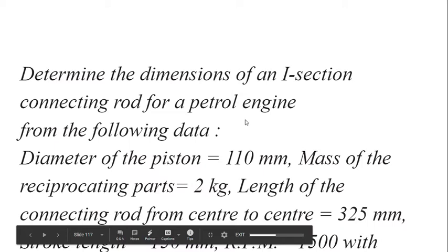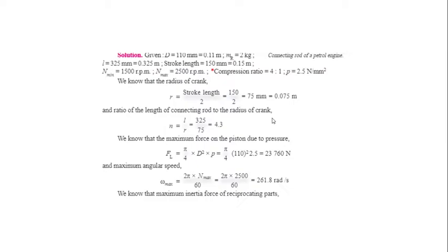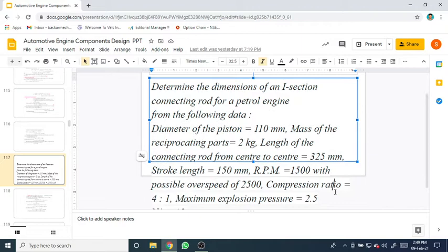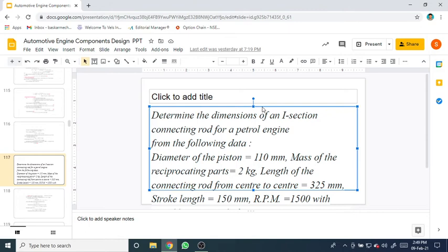Hi, this is Bhaskar. Today we are going to discuss a problem based on the connecting rod: determine the dimensions of an I-section connecting rod for a petrol engine from the following data — diameter of the piston 110 mm, mass of the reciprocating parts 2 kg, length of the connecting rod center to center 325 mm, stroke length 150 mm, speed 1500 rpm, possible overspeed 2500 rpm, compression ratio 4:1, and maximum explosion pressure 2.5 N/mm².